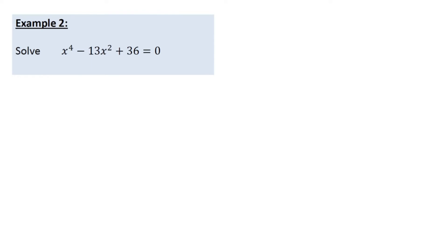Even though at the moment this doesn't look like a quadratic, I'm going to show you how it will be. The most important thing to know when solving hidden quadratics is substitution. In this case, what we're going to do is let x squared equal u, and this means we can rewrite this equation into a quadratic form — and this is how we solve hidden quadratics.